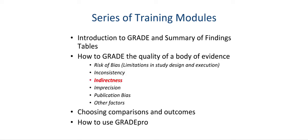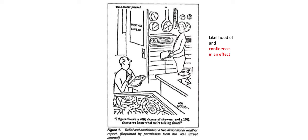This module deals with indirectness. In the GRADE approach, we assess the quality of a body of evidence and we separate the likelihood of and the confidence in an effect. It is like two meteorologists predicting the weather, with one saying to another: I figure there is a 40% chance of showers and a 10% chance we know what we are talking about.